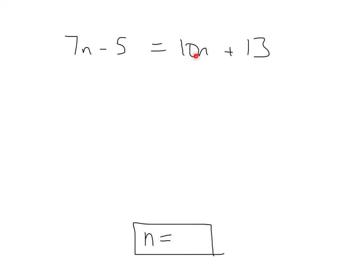If I subtract 10n from this side I'd get 7n minus 10n, which is negative 3n — not wrong, but here's what I think we should do instead. Let's take this 7n and subtract it from both sides. Why? Because 7n minus 7n cancels, leaving me with negative 5 equals 10n minus 7n, which is 3n plus 13.